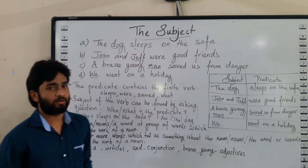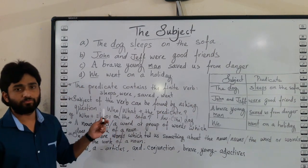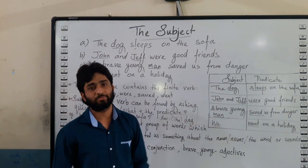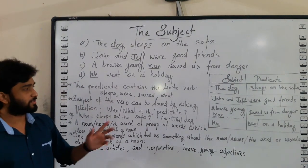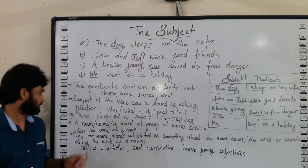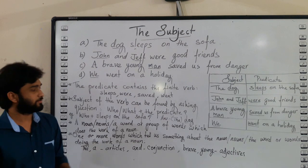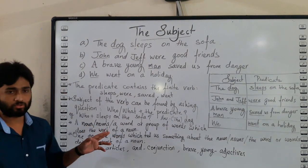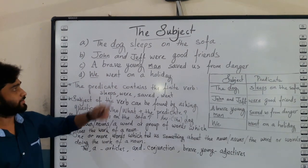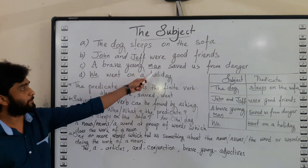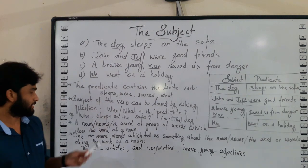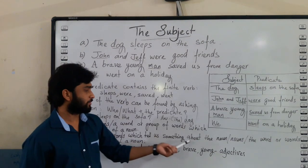Also, with these sentences we can see that nouns — a word or a group of words that does the work of a noun — form the subject. So here, 'John and Jeff' are the subject, 'man' is the subject, and 'we' is the subject. All these are known as subjects, and one or more words which tell us something about the noun.